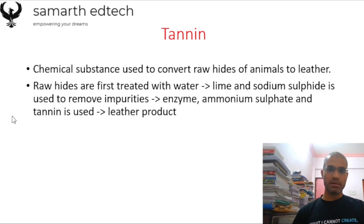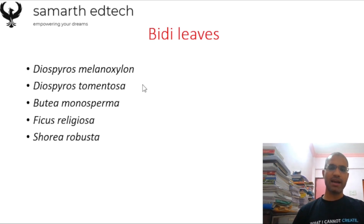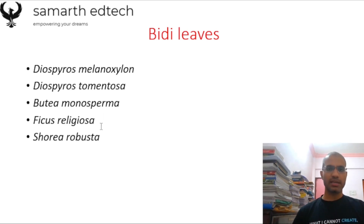Study the Manikandan book's table to learn which tree species are used to produce tannin. For beedi leaves, five tree species are: Diospyros melanoxylon, Diospyros tormentosa, Bauhinia monospermа, Ficus religiosa, and Shorea robusta. You have to memorize at least five or six tree species for each non-timber forest produce.